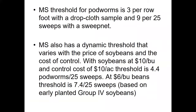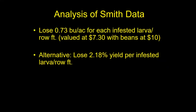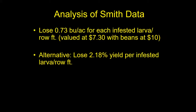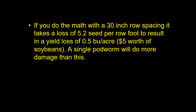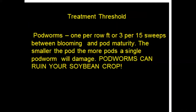In Mississippi, the threshold for pod worms is three per row foot on a drop cloth sample, and nine per 25 sweeps for the sweep net. Mississippi also has a dynamic threshold that varies with the price of soybeans and the cost of control. In Alabama, based on research by Dr. Ron Smith, we have data showing we lost three-quarters of a bushel per acre for each infested larvae per row foot, which is a 2.2% yield loss. It takes a loss of 5.2 seeds per row foot to result in a yield loss of half a bushel per acre at 38-inch row spacing. On pod worms in Alabama, the treatment threshold is one per row foot or three per 15 sweeps between blooming and pod maturity. The smaller the pod, the more pods a single pod worm will damage.